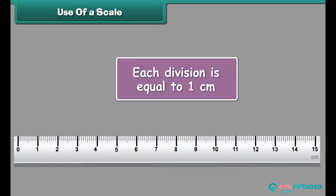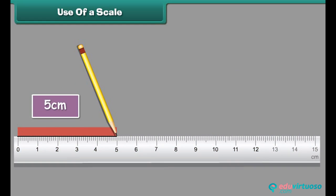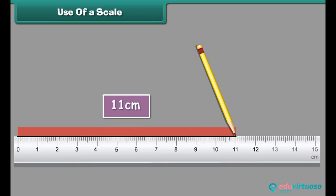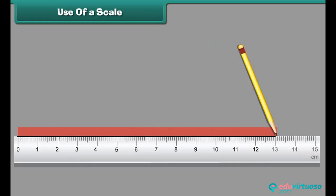The numbers are written from 0 to 15. From 0 to 5, we get 5 centimeters. From 0 to 11, we get 11 centimeters. From 0 to 15, we get 15 centimeters.